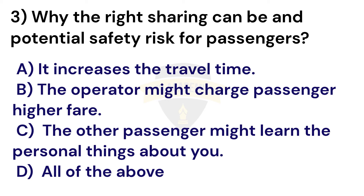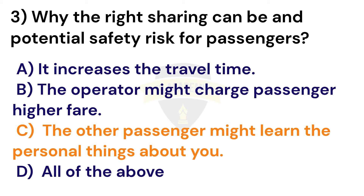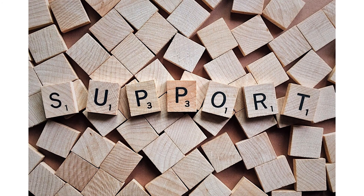Question 3: Why can ride sharing be a potential safety risk for passengers? The correct answer is Option C: the other passenger might learn personal things about you. One passenger could be put at risk if the other learns things such as their home address, where they work, their daily routines, and whether they live alone. A stranger knowing this information may make a passenger vulnerable to crime. Please subscribe to our channel and share with other drivers so everyone can pass their SARU test in the first trial.